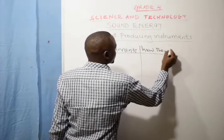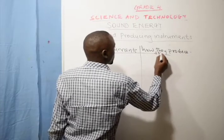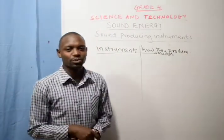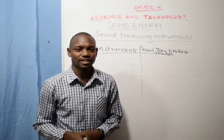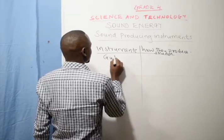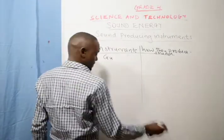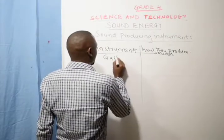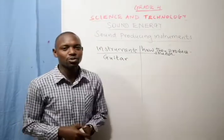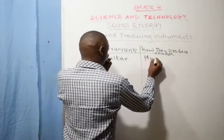So tell me some of the instruments that produce sound. We have the guitar — guitar is a musical instrument. How does a guitar produce sound? It produces sound through plucking.